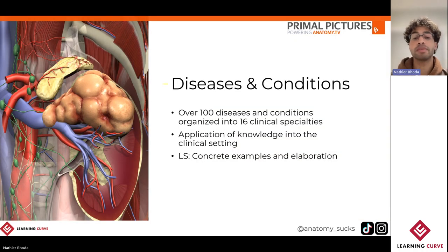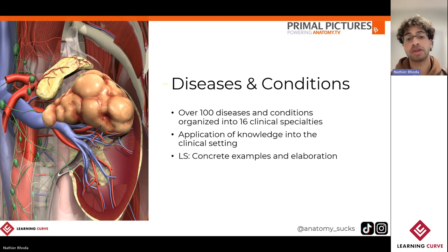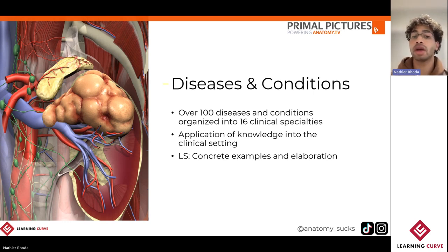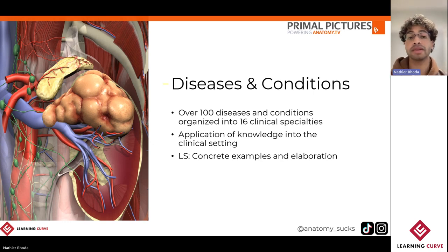Jumping over to something more clinical, we'll explore the Diseases and Conditions title. With Diseases and Conditions, it's been approached by mapping the content across 16 different specialties, and is presented with an explanatory video alongside the associated text, discussing both the differences between healthy versus diseased tissue and the gradual pathophysiology for each of those different conditions. This is where we'll take a look at applying both concrete examples as well as elaboration.